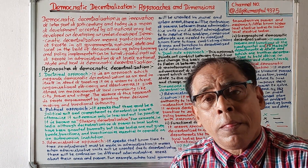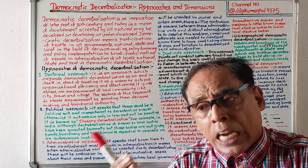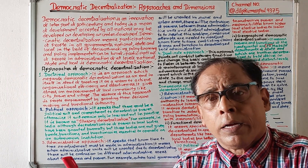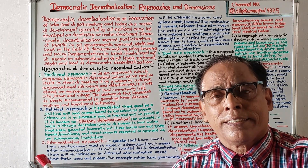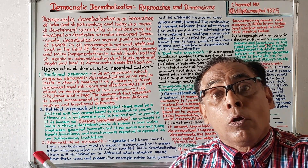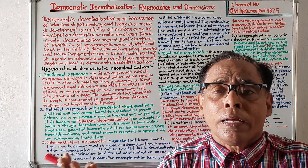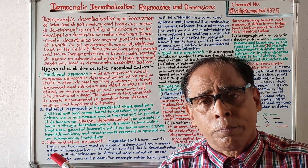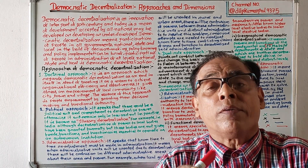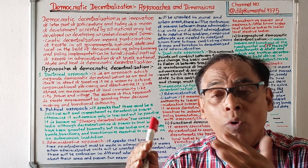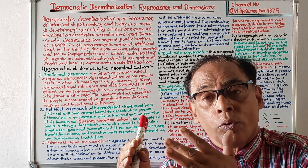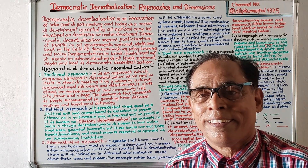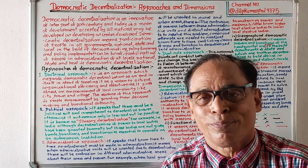For example, in India there has been transfer of power to local bodies, but local bodies do not have funds or functionaries to work. So, this is the political approach of democratic decentralization.